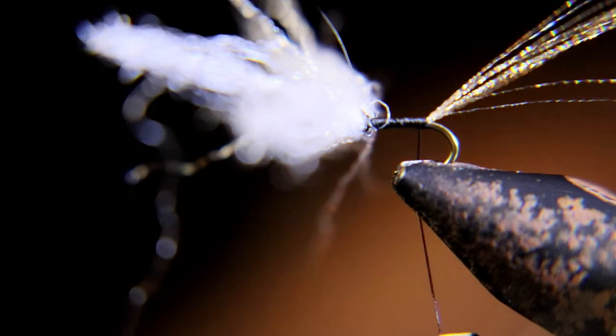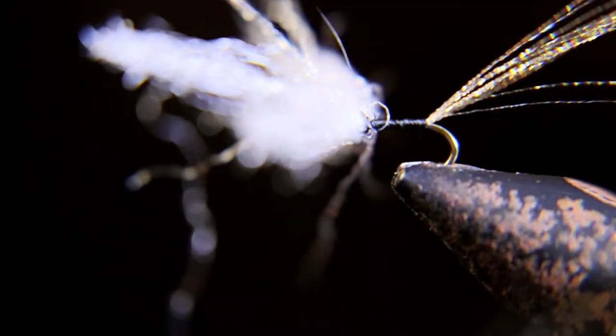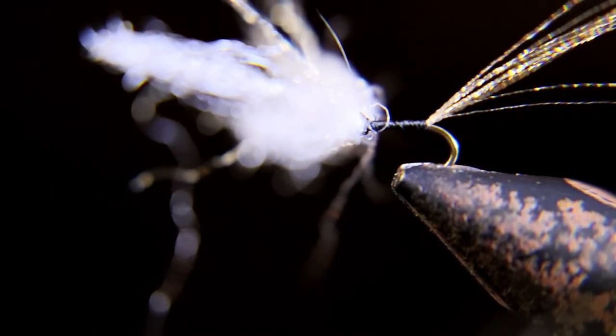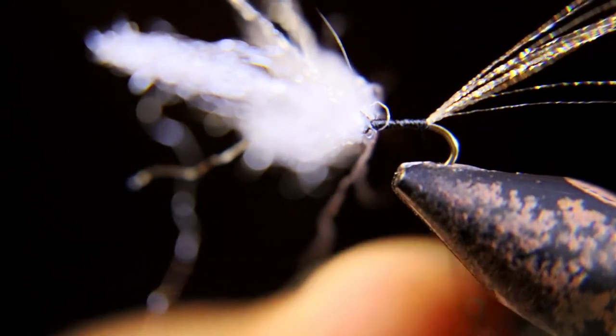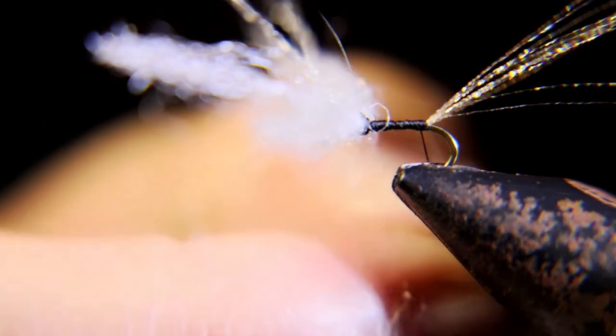Now we have some really dark gray flashy, sparkly dubbing. You can use black or the rust, traditional rusty, or I try to stay with darker colors because the spinners tend to be darker colors, but I tie them in different sizes and different colors.